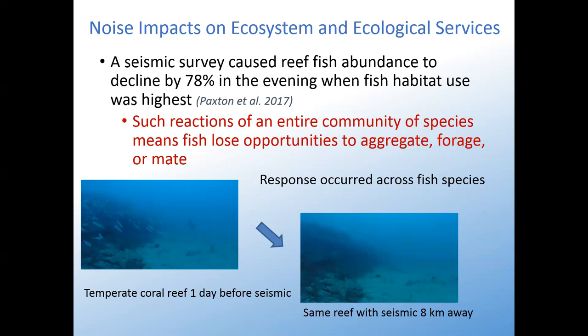A seismic survey caused reef fish abundance to decline by 78% in the evening when fish habitat use was highest. This is a temperate coral reef one day before a seismic survey — and this is the same reef during the survey, when it was still eight kilometers away. The response occurred across all fish species — a reaction of an entire community — meaning the fish lose opportunities to aggregate, forage, and mate.